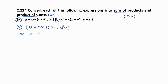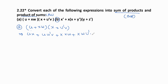We should write the variables in alphabetical order. When we multiply these two terms we get: u·x plus u·u'·v plus x·x·w plus x·w·u'·v. We should simplify this. u·u' is zero by Boolean postulates. x·x means we take only one x, giving x·w.